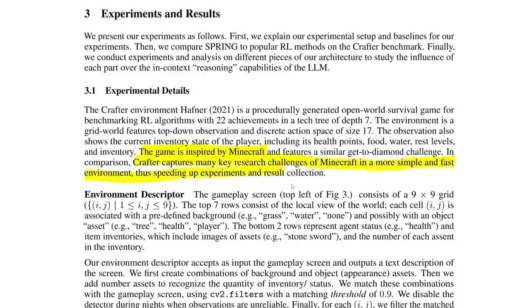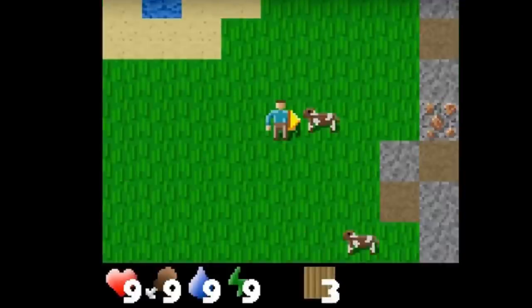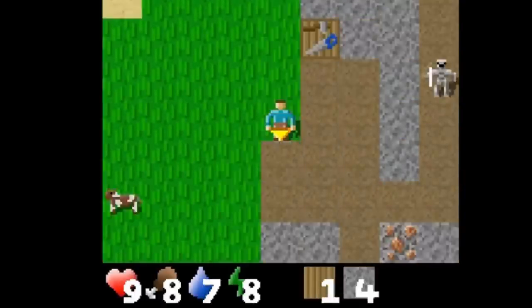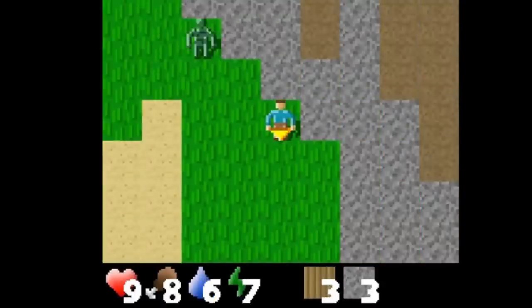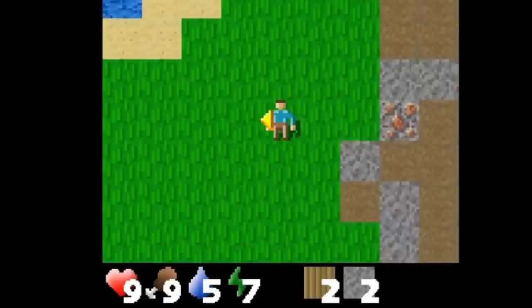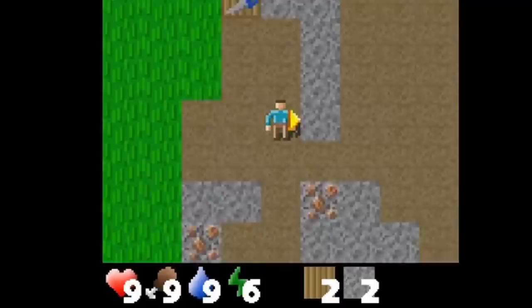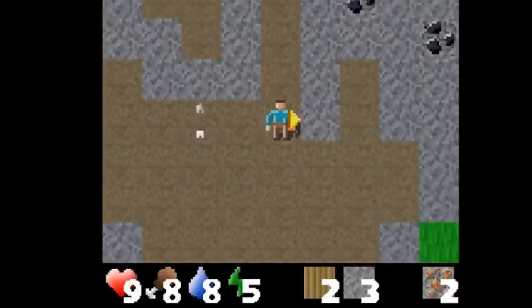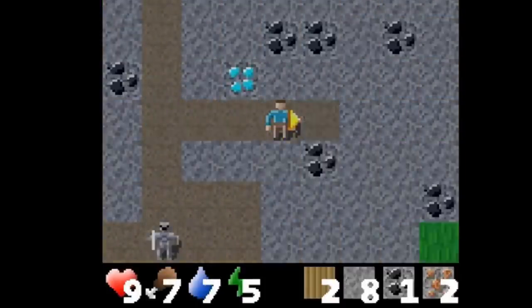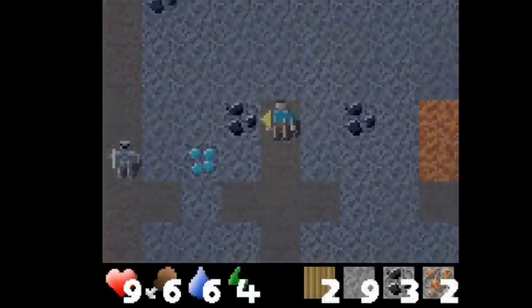In Crafter, you have a character who spawns in a 64 by 64 tile world, and they can see four tiles in every direction. In this little world, the agent can go around breaking blocks, fighting monsters, crafting items, and doing this all while dealing with water, hunger, and more status effects like that.